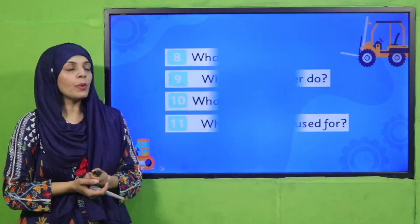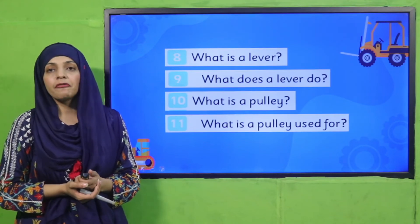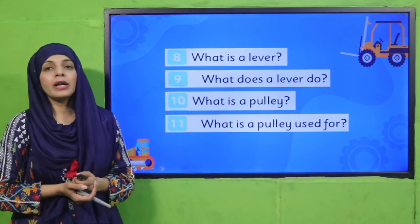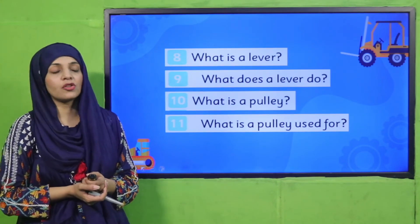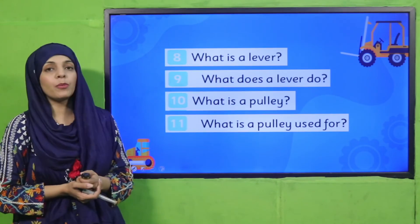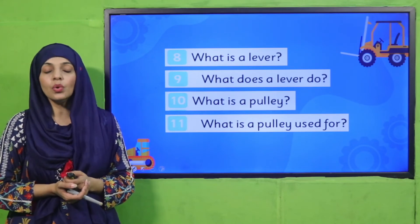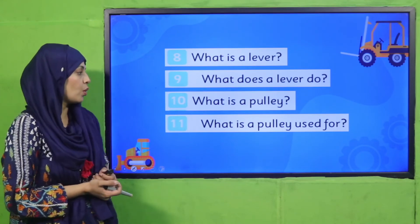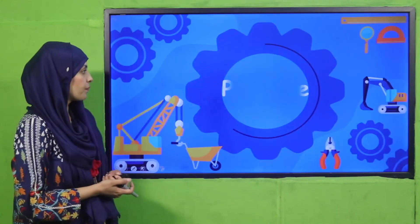For evaluation, quickly answer the following questions. What is a lever? A lever is a flat rod. What does the lever do? It helps us to lift heavy load by changing the direction of the force. What is a pulley? A pulley is a simple wheel and axle used to change the direction of the force and lift heavy load. What is a pulley used for? It is used to lift heavy load.